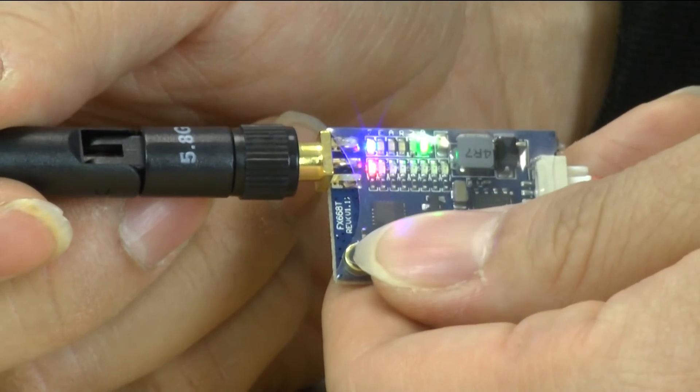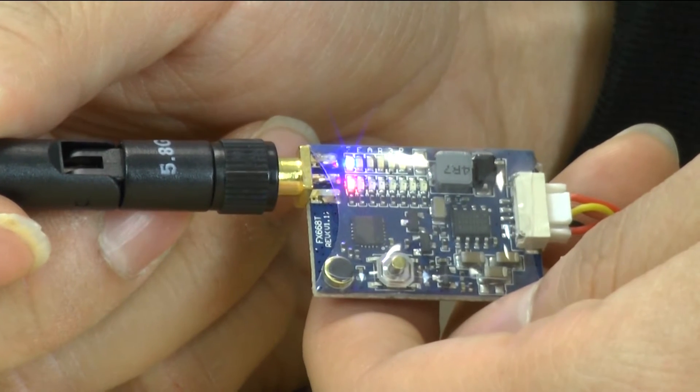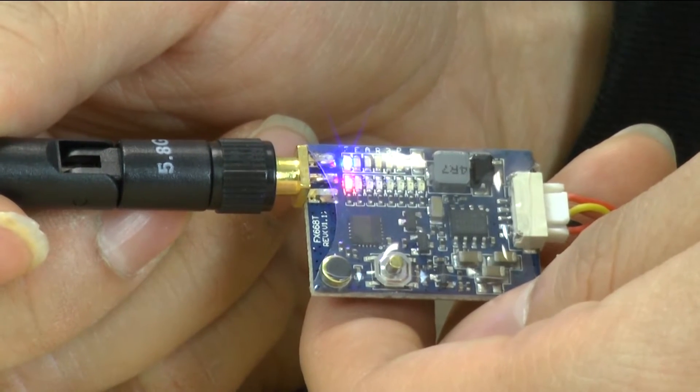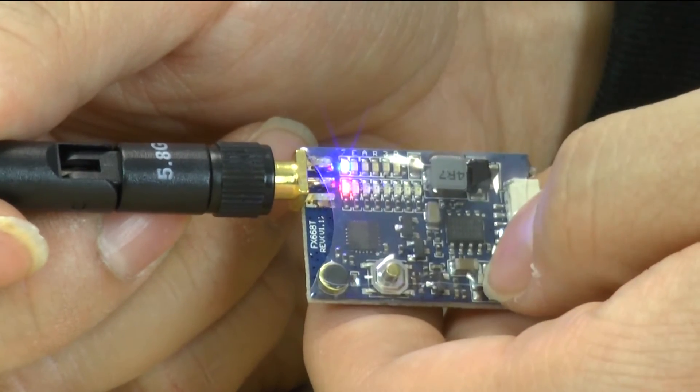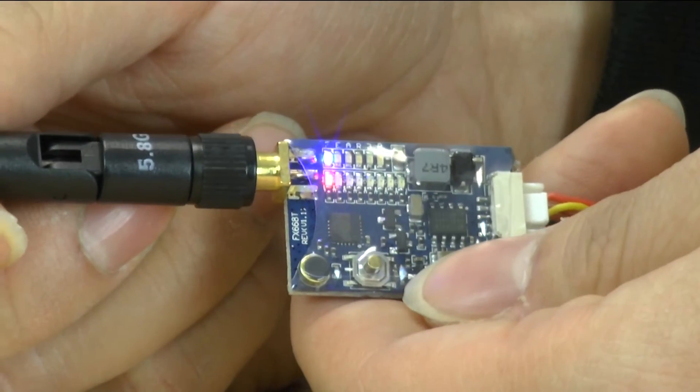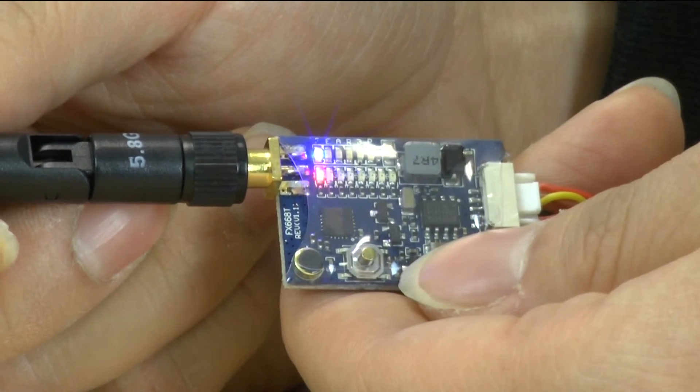To turn it off go ahead and push the button. Hold for a few seconds and when the green LED turns off you're no longer broadcasting any video. This allows you to switch channels and bands without having to worry about hitting somebody else's VTX and then destroying their video.